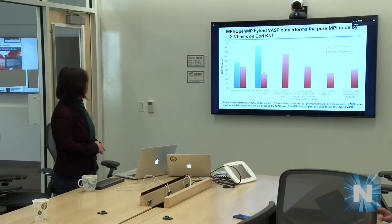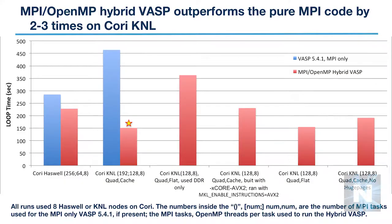Here is the current performance achieved. The blue bar is the pure MPI code and the red bars are the hybrid MPI+OpenMP code — the optimized code. Looking at the second bar group with the star, that's the best performance we get now. Compared to the pure MPI code, it's about two to three times speedup. This is a big performance gain.